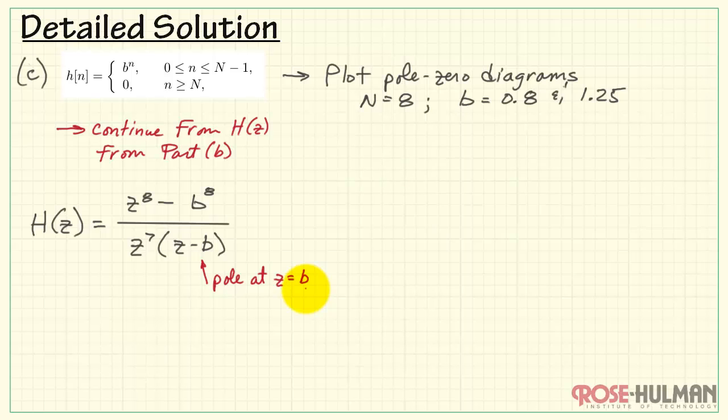When Z equals B, this expression right here evaluates to B minus B. And that's zero. That would give us a zero in the denominator. That's a pole. Here we have a 7th order pole at the origin. Finally, we need to find all the places where the numerator goes to zero.